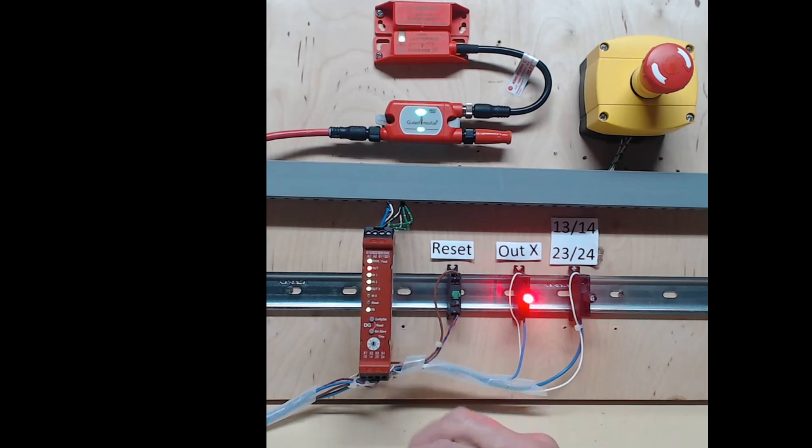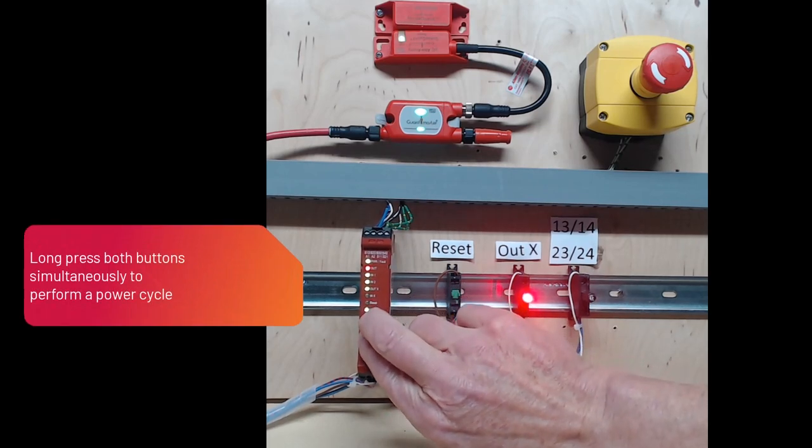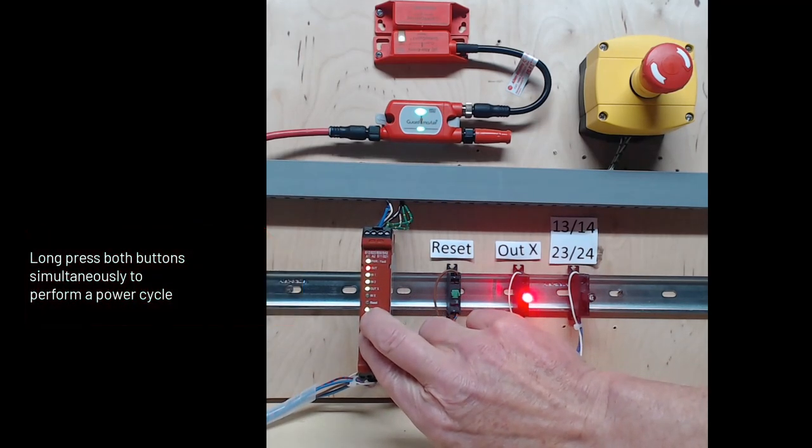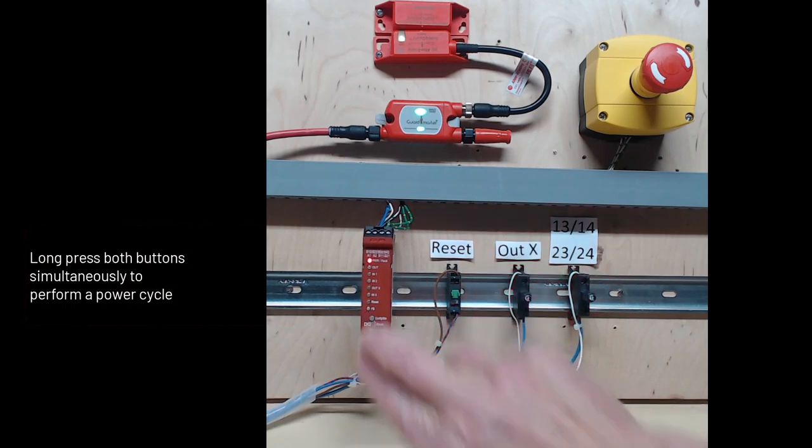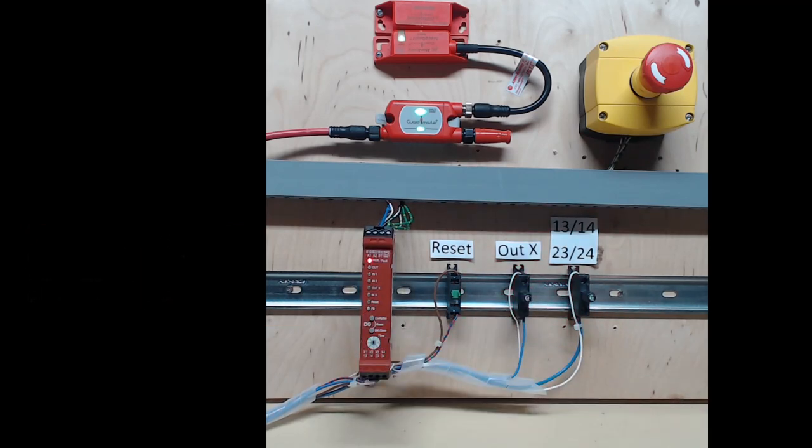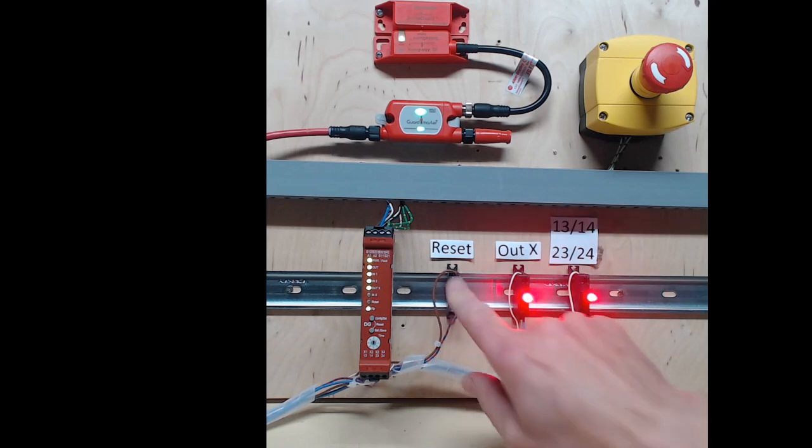Now here's a tip. If you long press both buttons simultaneously, the DG will perform a power cycle. It's rebooting. And now it's come up in operational state and everything is good.